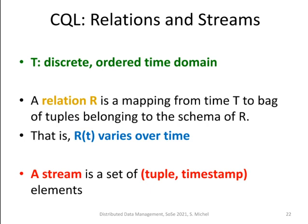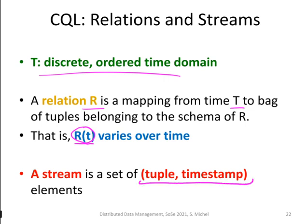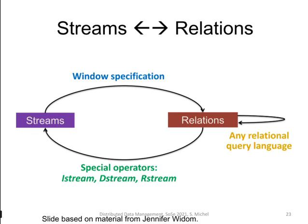Let's clarify the connection between relations and streams. In STREAM and CQL, we consider a discrete ordered time domain — say 1, 2, 3, 4, and so on. A relation R is a mapping from time T to a bag of tuples belonging to the schema of R. That means we have relations depending on the time, with a parameter T for the relation R. A stream is a set of elements of the form (tuple, timestamp). If we have a stream and want to make a relation out of it, we take a window specification to move from the world of streams into the world of relations, and then we can use any relational query language such as SQL.